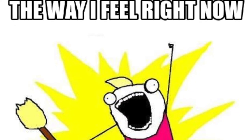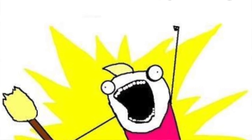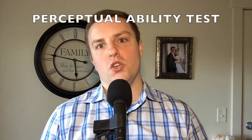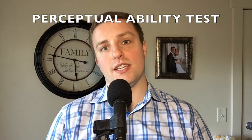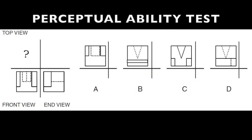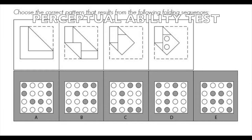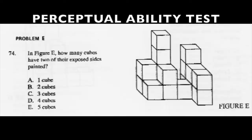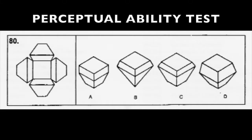And that's all for the science section! Once you start the PAT section, you will be tested on six subsections in this order: first, Apertures, or what I like to call the keyhole section; View Recognition, also known as the top front end section; Angle Ranking; Paper Folding; Cube Counting; and lastly, the 3D Form Development section.